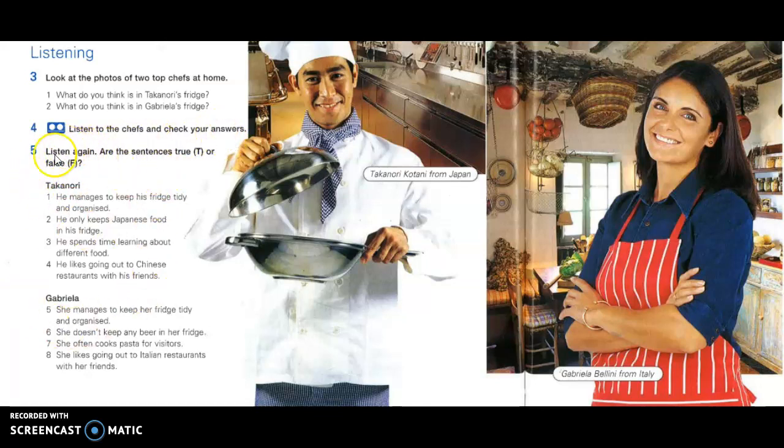Next, they're going to do a more detailed listening. It's a true or false task. So they're going to listen again to the same audio. And this time they need to answer some sentences, true or false. This is four sentences for each Takanori and Gabriela. And they listen and write T if the sentence is true and F if it's false. Make sure they're clear about what they need to do by doing an example. So you can play the audio up to where Takanori answers this first statement and get them to very briefly tell each other whether they think number one is true or false.